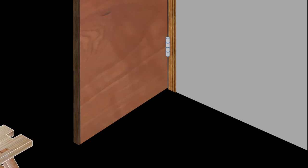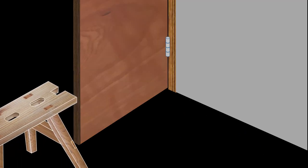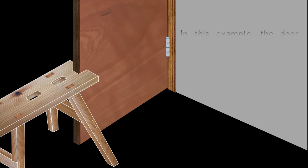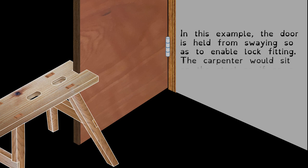Here we see another reason for this notch. The sawhorse notch is preventing the door from swaying while the lock is being fitted. The carpenter would sit across this sawhorse as if he was sitting on a horse, so the carpenter's weight is keeping things stable as well as the notch.